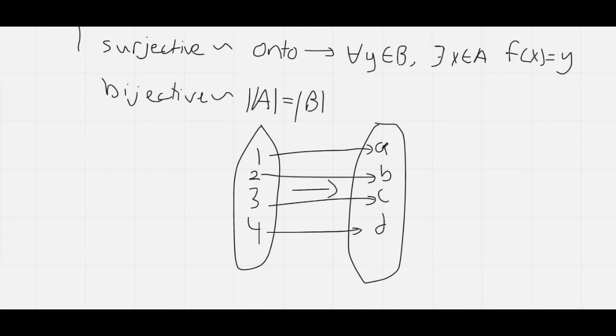This is a bijective function, because any element that you choose in B will have a singular value in A corresponding to it. That is, there are no two values in A which map to the same value in B. Also, every value in B gets mapped to, so this is a bijective function.